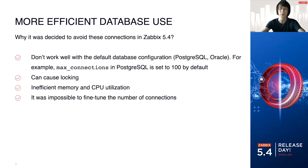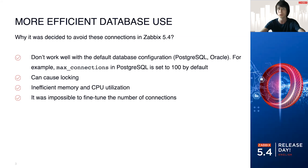So why was it decided to avoid these connections in Zabbix 5.4? First of all, they don't really work well with the default database configuration. For example, in PostgreSQL, max connections is set to 100 by default. It also can cause some locking on the database side, results in inefficient memory and CPU utilization. And before Zabbix 5.4, it was really impossible to perfectly fine-tune the number of connections to the database.